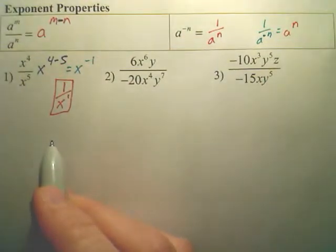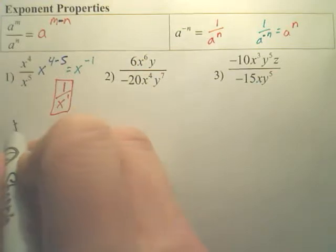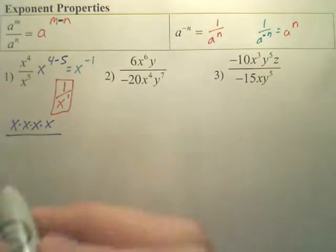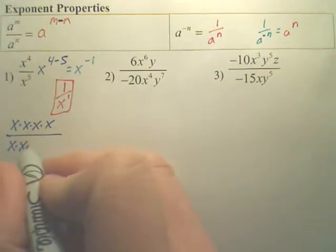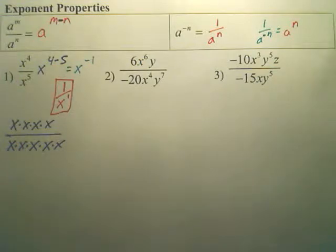Now, if you struggle remembering that you're supposed to subtract these, some people forget and mix it up, here's your way of showing it. x to the 4th, this is the long way, is this. x to the 5th is this.